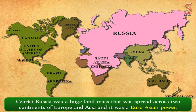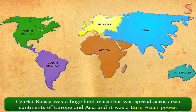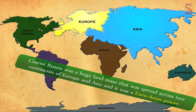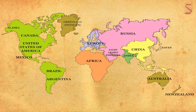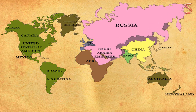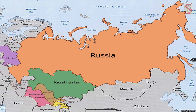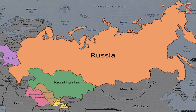Tsarist Russia had a huge landmass spread across two continents of Europe and Asia, making it a Euro-Asian power. The term Tsarist characterizes absolute dictatorship. With the third largest population in the world with 156 million people after China and India, Russia consisted of various nations like Russia, Ukraine, Uzbekistan, Kazakhstan, Tajikistan, Turkmenistan, etc.